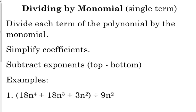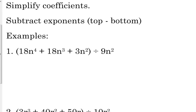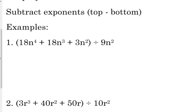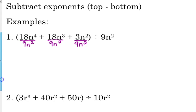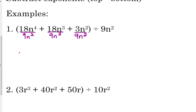So that first example there, when we see 18n to the 4 plus 18n cubed plus 9n squared divided by 9n squared, here's what I want you to do. I want you to write over 9n squared for each and every term here. We're going to divide the coefficients. So that first one, 18 divided by 9 is 2. We subtract the exponents, top minus bottom. 4 minus 2 is 2, so that's going to leave us with 2n squared.